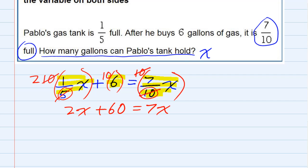We just need to get the x's on one side and I'll move the 2x over by subtracting it. That leaves me with just 60 on the left-hand side and 5x on the right-hand side.